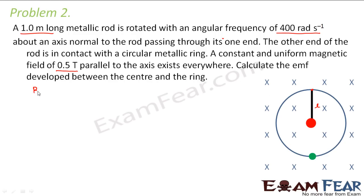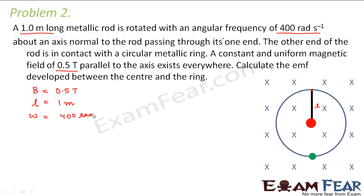The values given in this problem are: magnetic field B = 0.5 tesla, length of the rod L = 1 meter, and angular frequency ω = 400 radians per second.